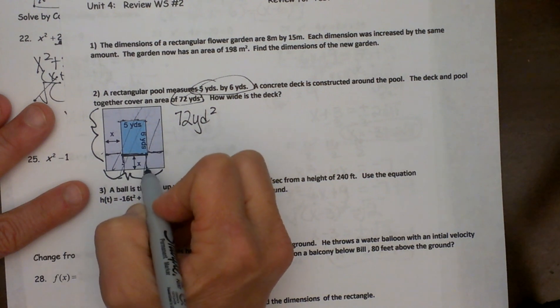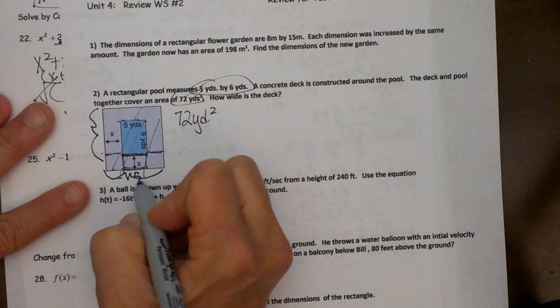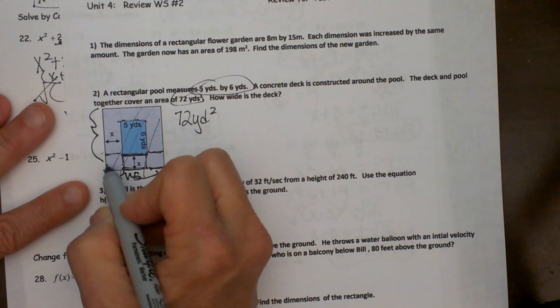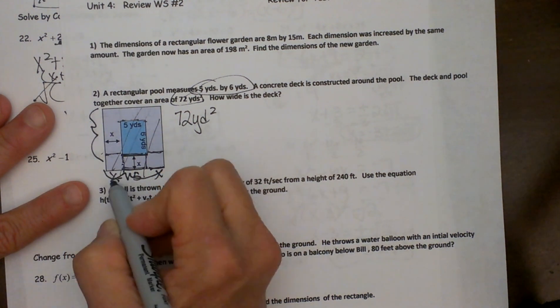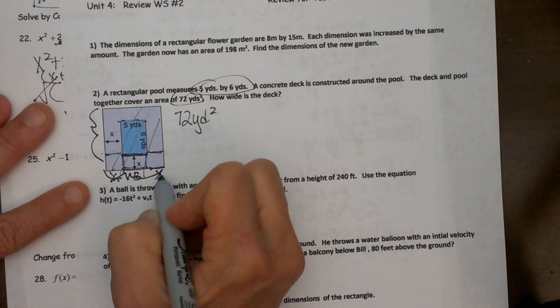So if I kind of draw it down here, this section is five. This section we don't know it is x and this section over here is also an x. So that is an x plus a five plus an x. So what is that? Two x plus five.